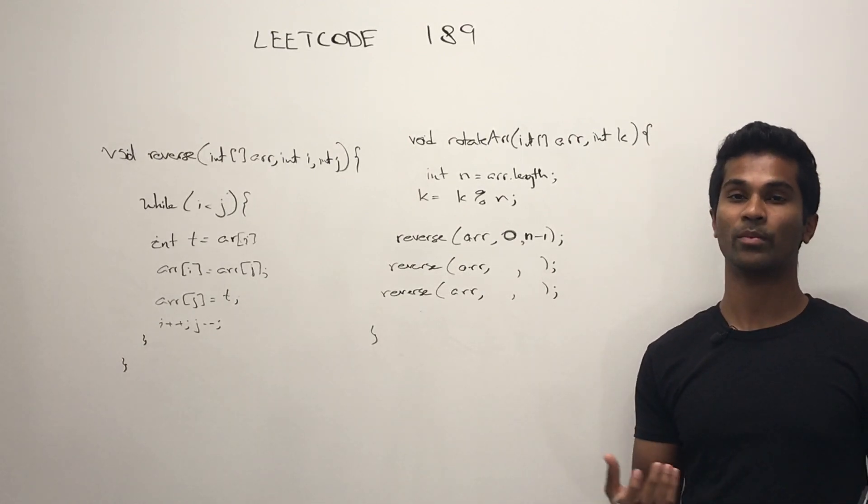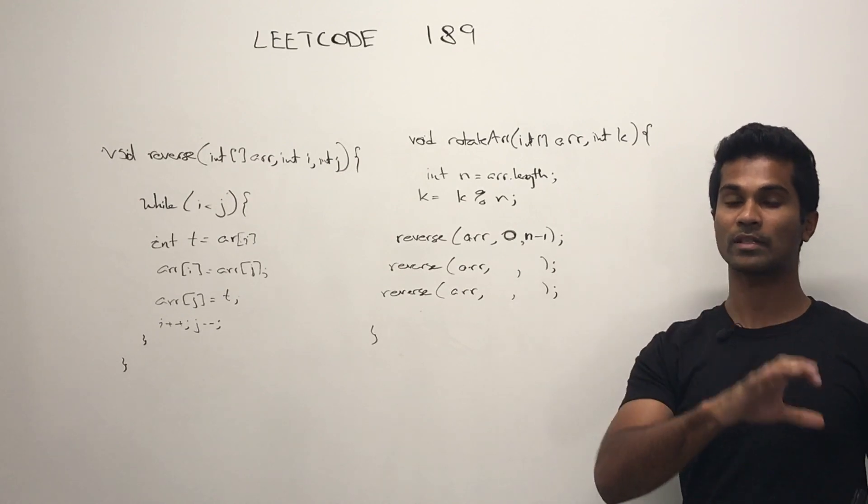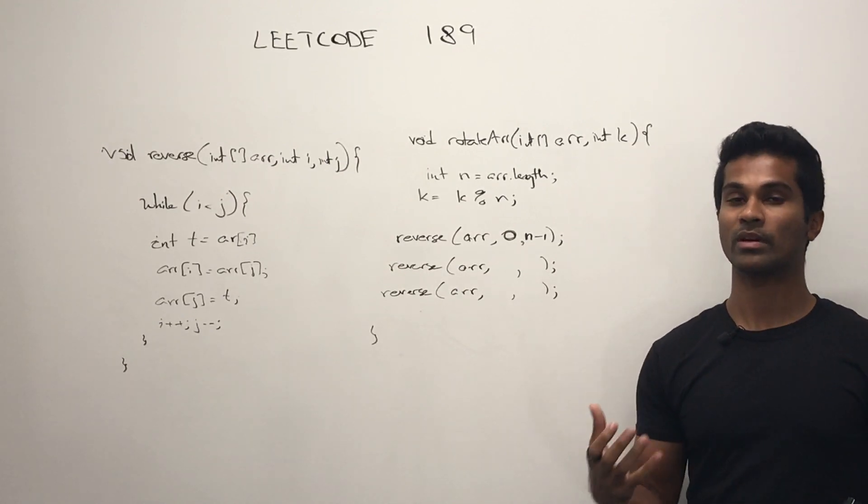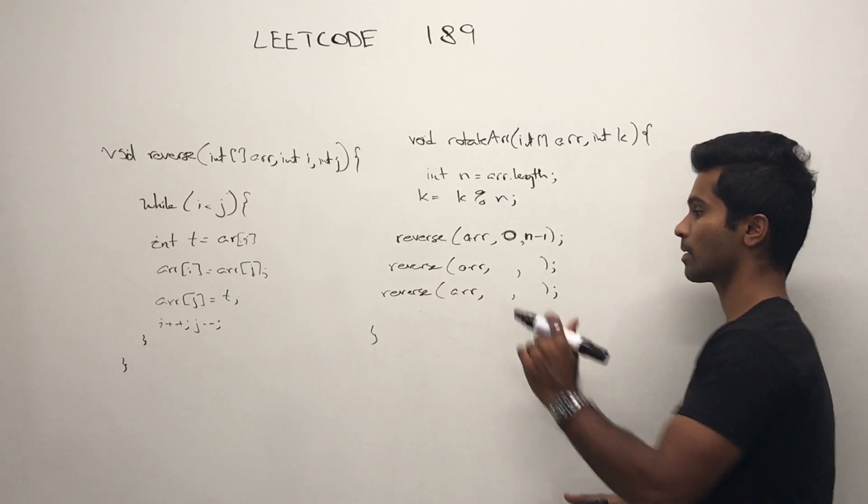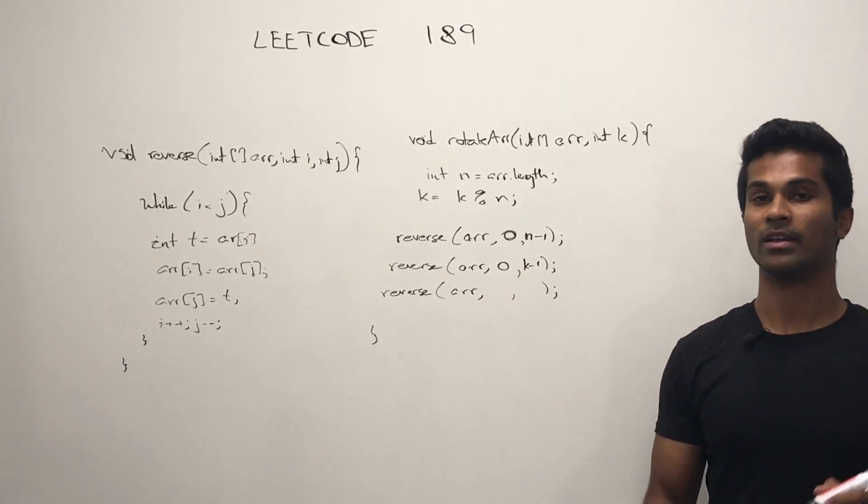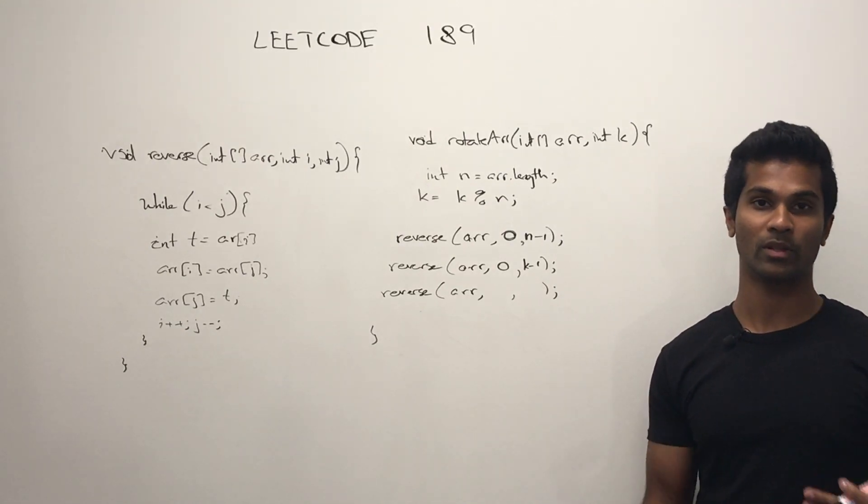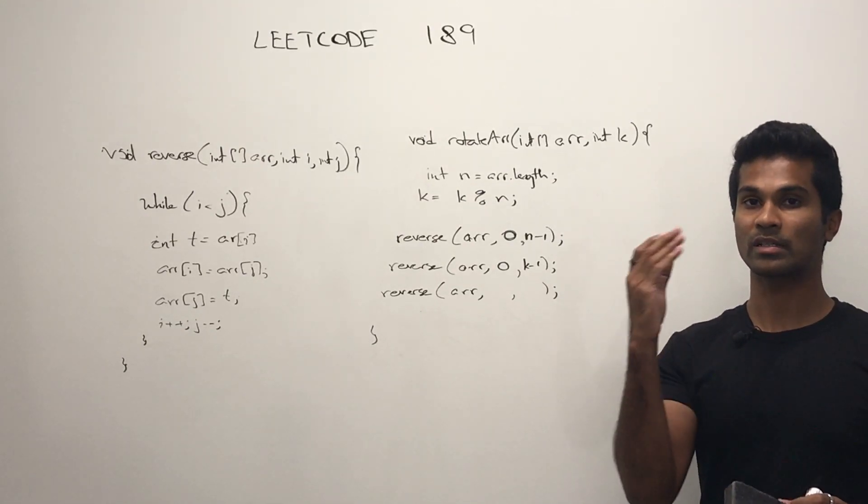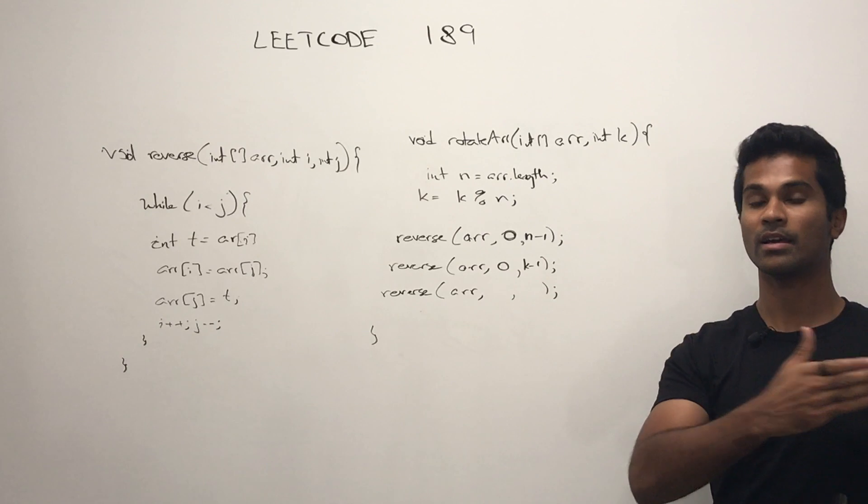Now the second two are going to be the flips of the appropriate k. So from the earlier example, we had five and six on the left side now, but now we just have to flip them around so we get the correct output. And the one, two, three, four also need to be in the right spot. So all we have to do is k, the index k, till the rest of the array.